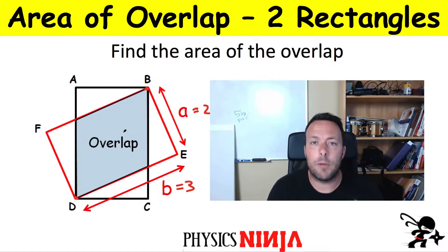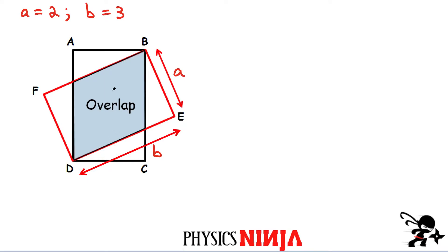Let's set up this problem. The first thing I want to do is define some distances. Remember, the length from D to E is simply b, and I'll evaluate that for the specific case where b equals 3. I'm going to focus on the part up above and find a particular distance. I'm going to call this distance X and this other distance Y.